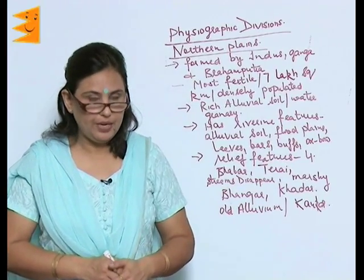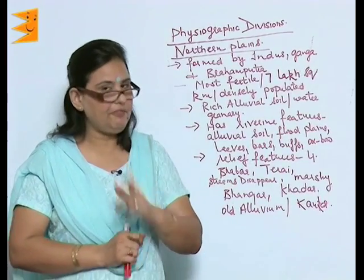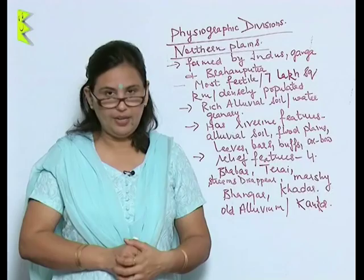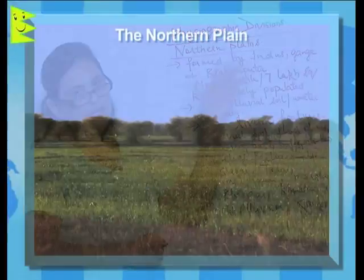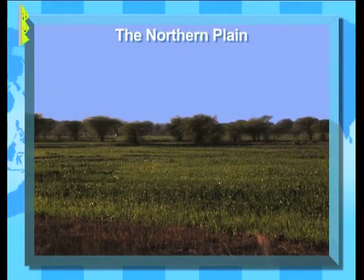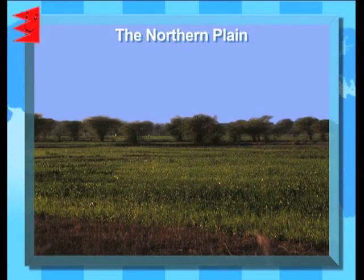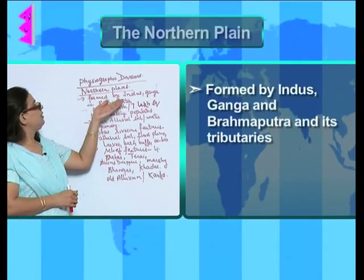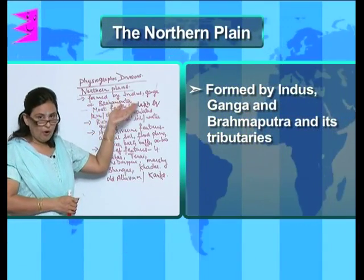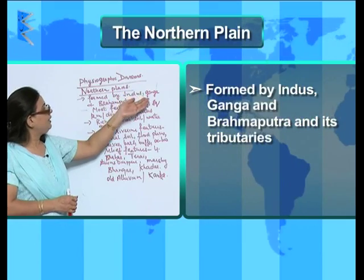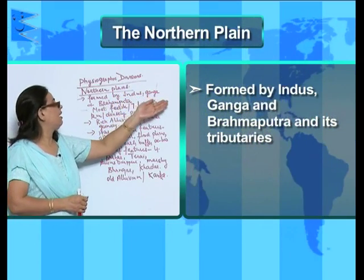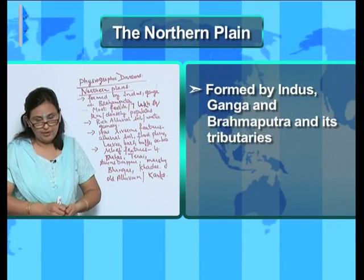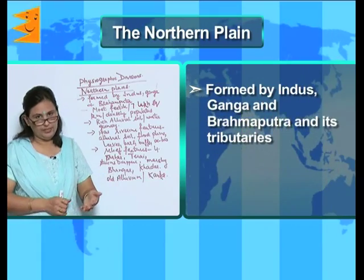Let us talk about the second physiographic division of India, which is the Northern Plain. The first one was the Himalayan mountains and the second is the Northern Plains. The Northern Plains have been formed by the Indus, Ganga, and Brahmaputra rivers and their tributaries.